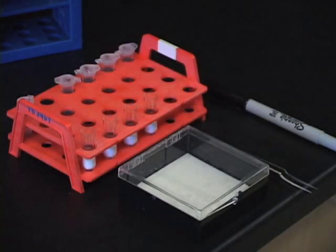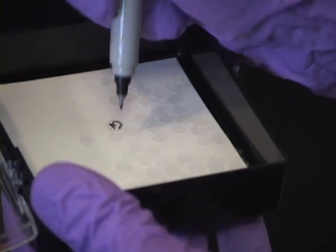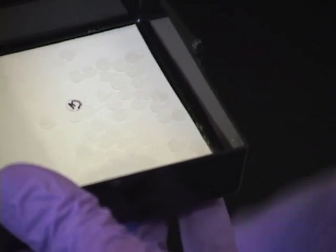Using a Sharpie, draw the number 3 on a polylysine coated coverslip. Coverslips are from Belco Glass. We coat them with polylysine ourselves and do not use commercially coated coverslips.